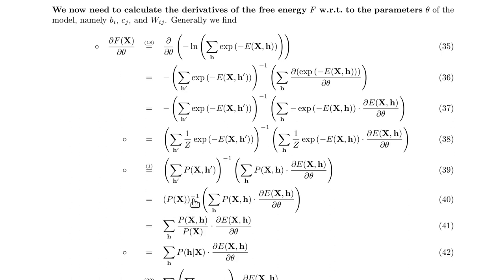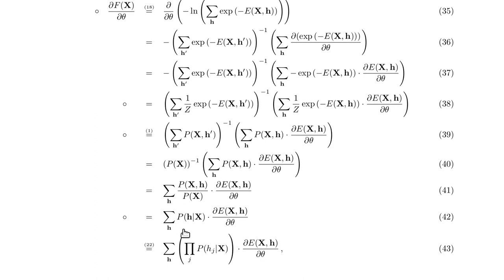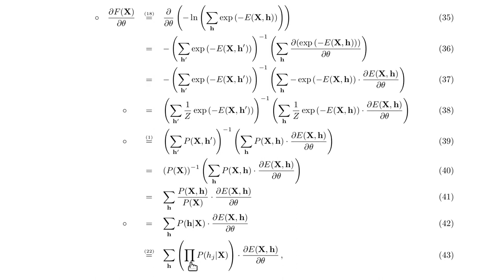Then, because of the minus 1 here, we can divide by p(x). And this, by simply Bayesian formalism, is p(h | x). Now we use the property that the hidden units are statistically independent given the visible units, so we can write p(h | x) as a product of the p(h_j | x).